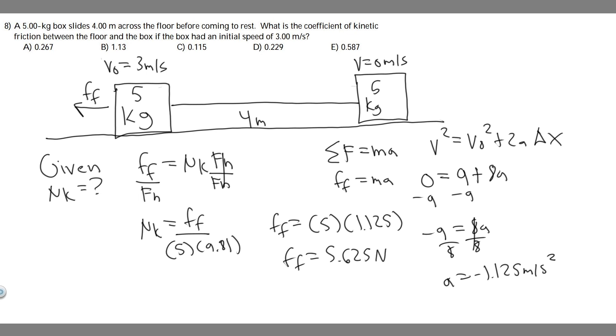Now we have the force of friction, and we can just plug it into what we solved for in the beginning. Mu sub k equals 5.625 divided by 5 times 9.81. You'll find that it equals 0.11467, which is about 0.115.